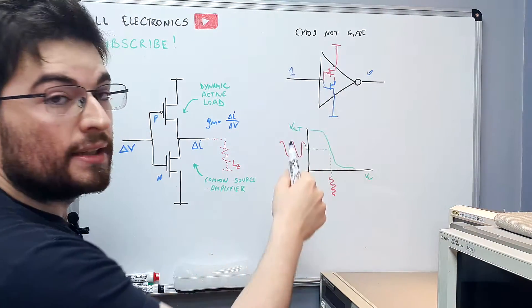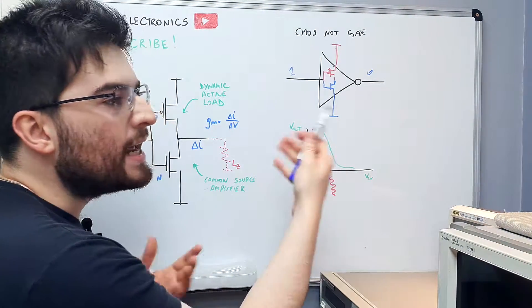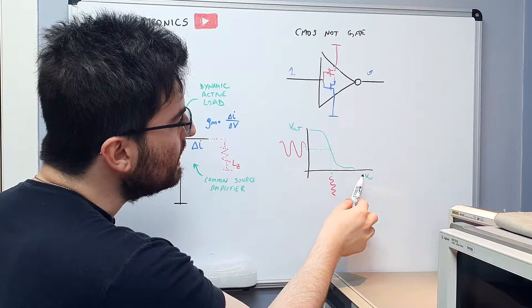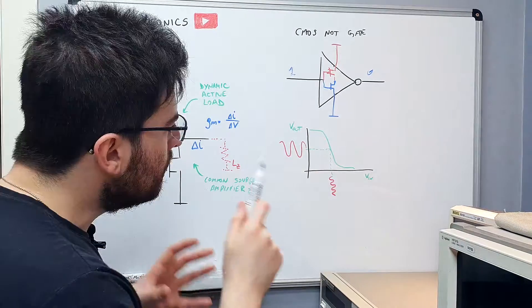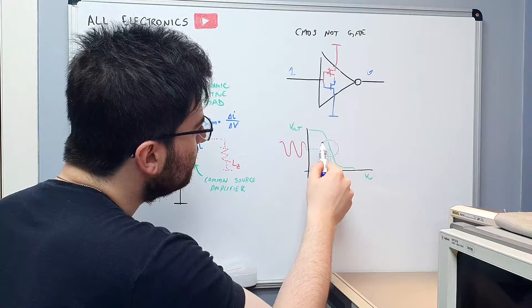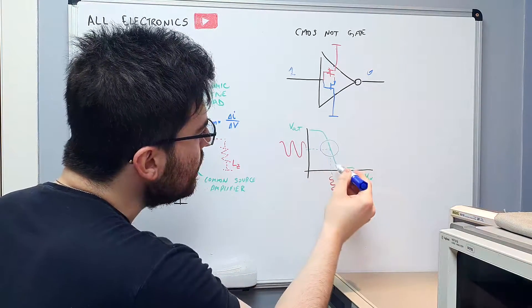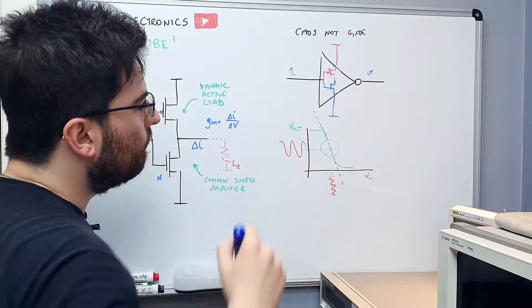And this, when looked at as an amplifier, will saturate on VCC, a high output, or on zero, or in GND, a zero logic output. So we can see that here on the middle of the transition, we have some very high gain. The inclination of this line here is the gain of this stage.